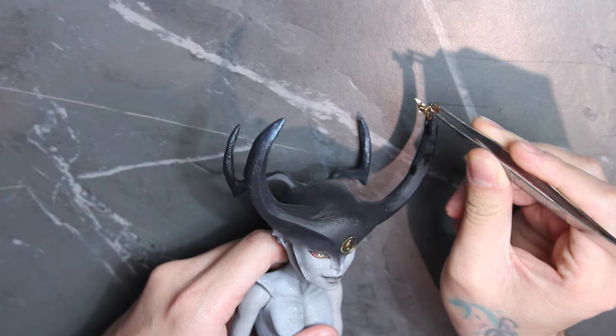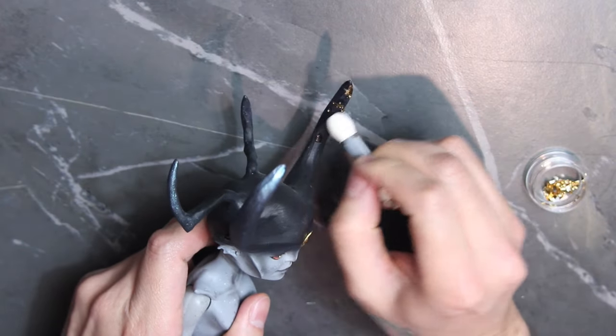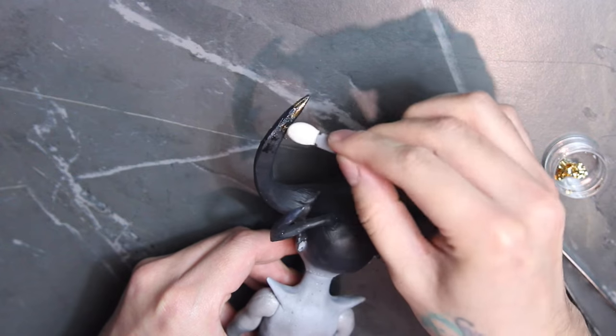And add gold leaf. To really smudge the leaf from the sticky resin, I'm using an eyeshadow applicator. And I'm going to do this on the rest of the horns.